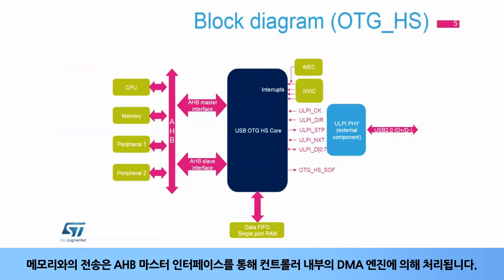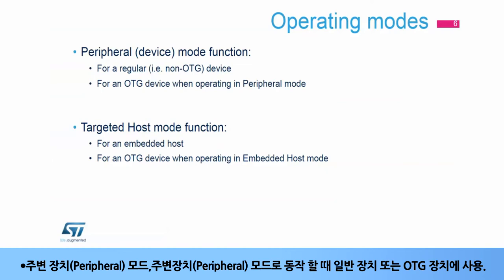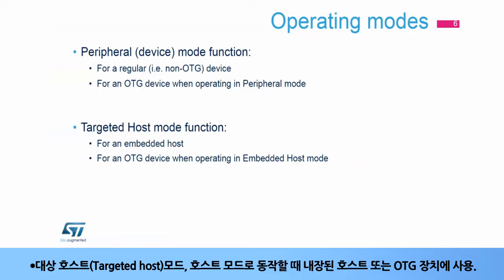Transfers to and from memory are handled by a DMA engine inside the controller via the AHB master interface. At any given time, one of the two operating modes will be functional: peripheral mode, which will be used for a regular device or an OTG device when operating in peripheral mode, or targeted host mode, which will be used for an embedded host or an OTG device when operating in host mode.